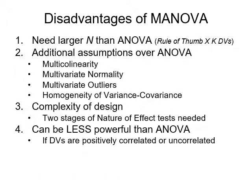Let's talk about the advantages and disadvantages of MANOVA. Generally speaking, we need a larger N every time we're adding variables to a statistical design, whether they're IVs or DVs. The rule of thumb is that whatever sample size we need for ANOVA, we multiply that by the number of DVs we have. So we generally want ten or more people in every cell within an ANOVA. A two by two design has four cells, so that's forty. With two DVs we'd want eighty; with three DVs we'd want one hundred twenty. And again, this is a bare minimum.